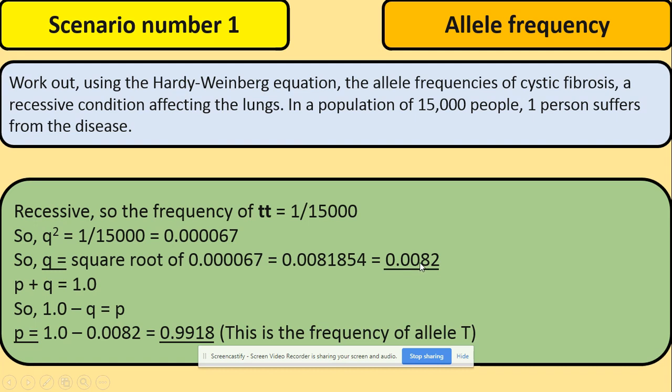So if you would like to then work out further the frequency of dominant alleles or the genotypes we use this equation p and q equals one. So we take away our frequency of the recessive allele from one and that will give us the frequency of the dominant allele.